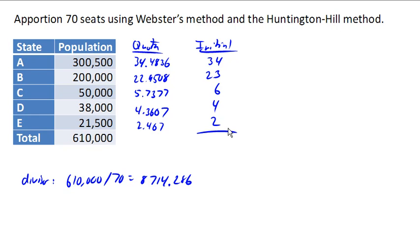If we add those up, we only got 69 representatives, which means we're going to need to try a new divisor.